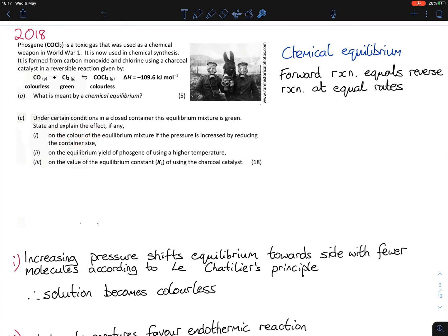Therefore, the color becomes colorless. This is the explanation: increasing the pressure shifts the equilibrium towards the side with fewer molecules according to Le Chatelier's principle, and the color becomes colorless because there are fewer molecules on the right-hand side.